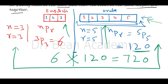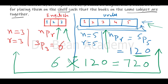So you get 720 configurations when the arrangements are always together — these five Urdu books will always be together and similarly these three English books are always together. Just calculate the number of permutations separately, multiply them, and you get the permutations when they are together. But wait — please stop, I think I am forgetting something.